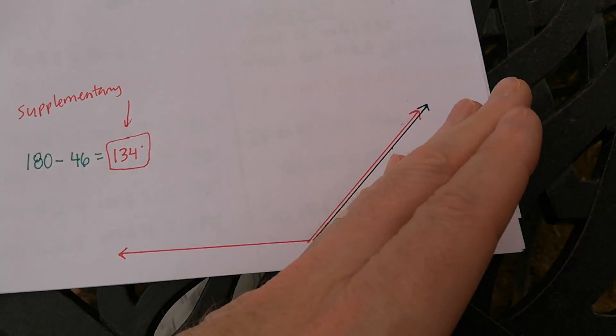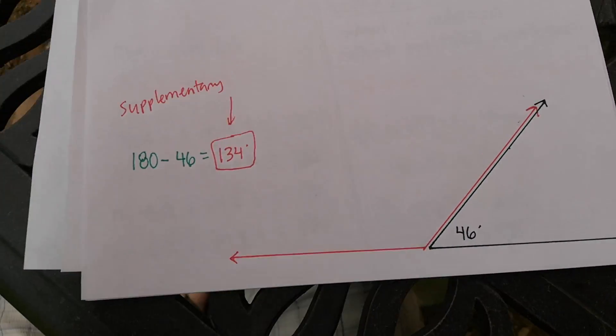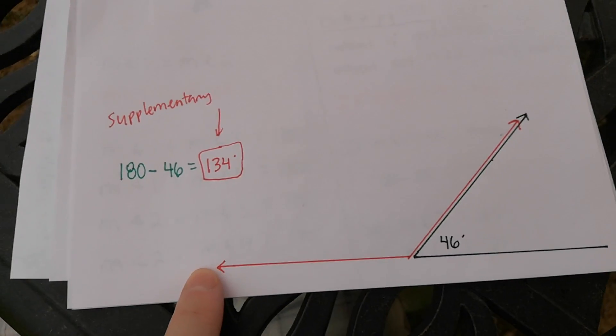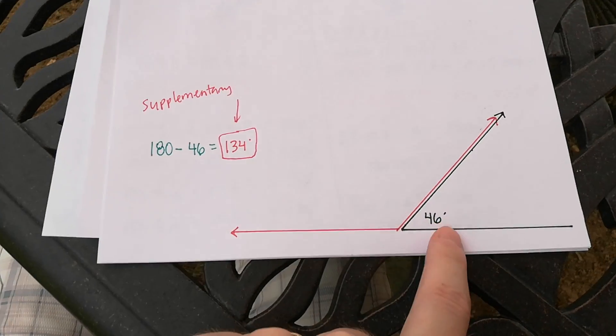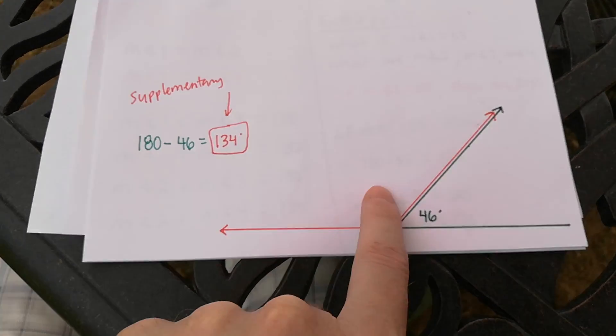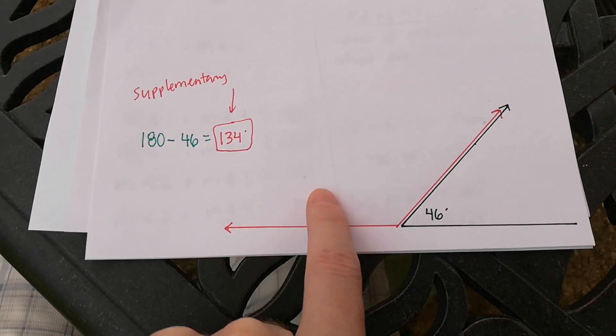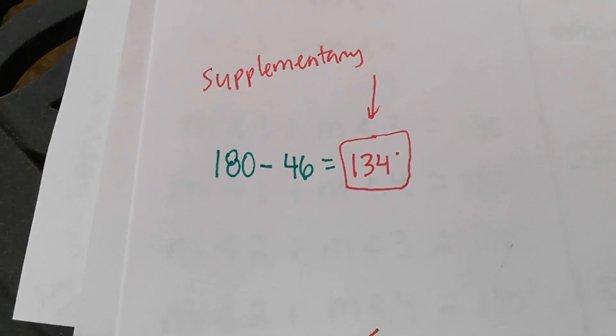Well, then what would the supplementary one be? Well, if you're back to your 46 degree angle, this time we've got to go open it all the way up for a whole straight line. How would we do that? Well, 180 degree straight line, take away 46 degrees that we have here, leaves this big old fatty obtuse angle, which would be 134. You guys got this. This is really easy. You guys can do this. Complementary adds up to 90, supplementary adds up to 180. Wait, did I say that right? Complementary is 90, supplementary is 180. Okay, here it goes.